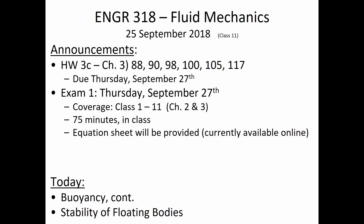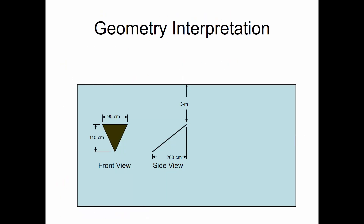We're going to talk about stability of floating bodies today after we do one last buoyancy-related problem. Before we do that, are there any questions related to the announcements? Let's make sure we're on the same page with looking at things from different views. In a previous semester I gave an exam question for a flat plate that was inclined, and a lot of people got it wrong because they didn't have the correct geometry interpretation. So for this one — what are the dimensions of the triangle? How tall is it and how wide is it?